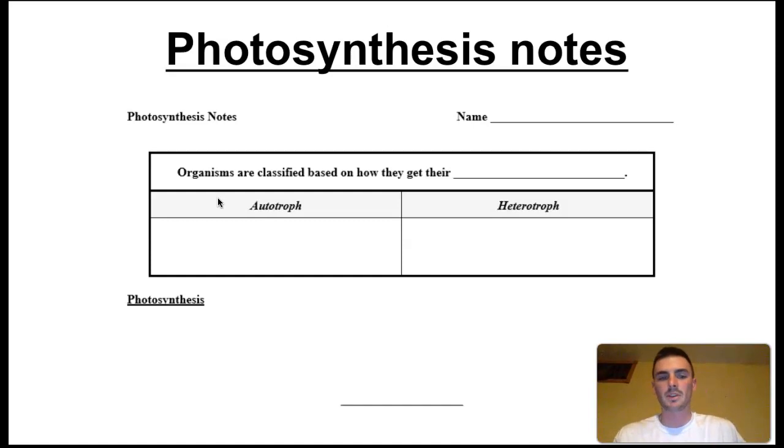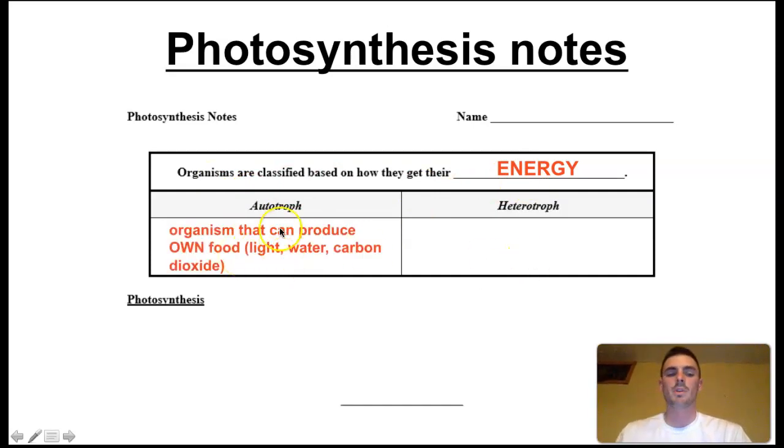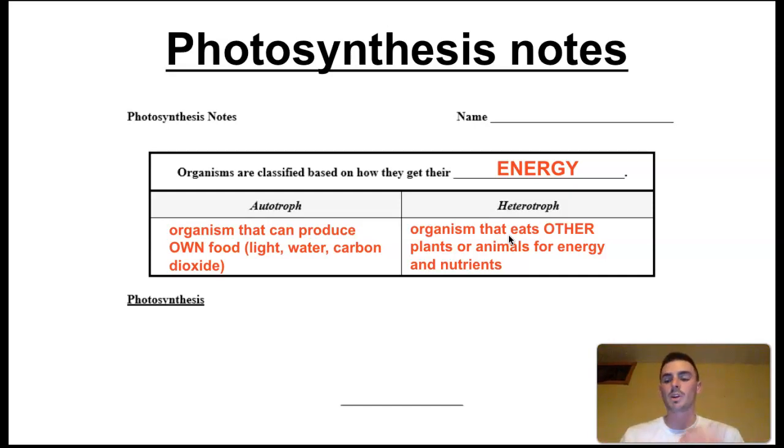When we look at photosynthesis, we really start with and think about how organisms get their energy. We've learned these two words before. An autotroph, if a gun is an automatic, it loads itself. If an organism is an autotroph, it is an organism that makes its own food, using light, water, or carbon dioxide. The prefix hetero has to do with other. So a heterotroph is an organism that eats other plants or animals for energy and nutrients.